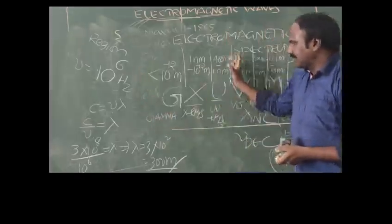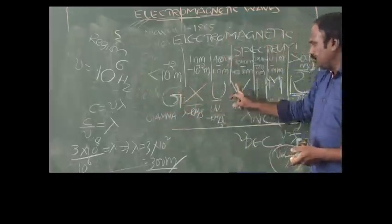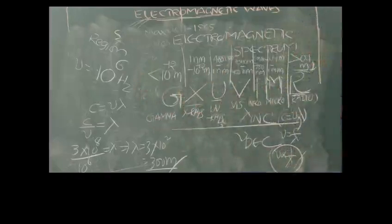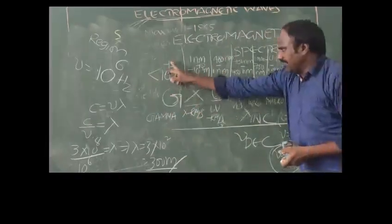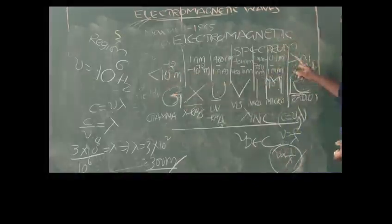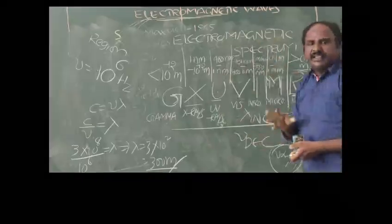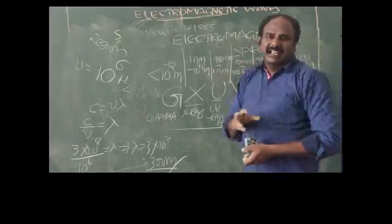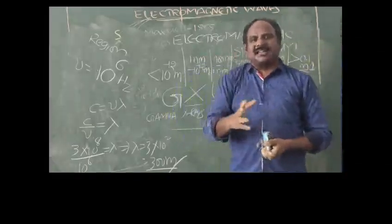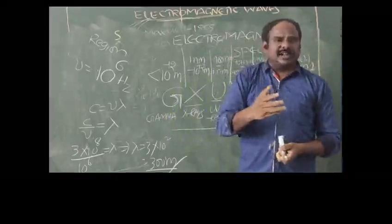Once you remember the mnemonic G, X, U, V, I, M, R with wavelengths starting from less than 10⁻¹² meters and ending at greater than 0.1 meters, any problem related to electromagnetic waves becomes much easier to solve.